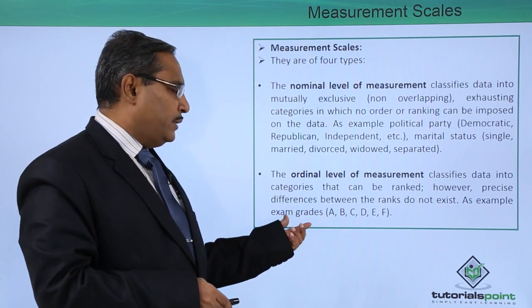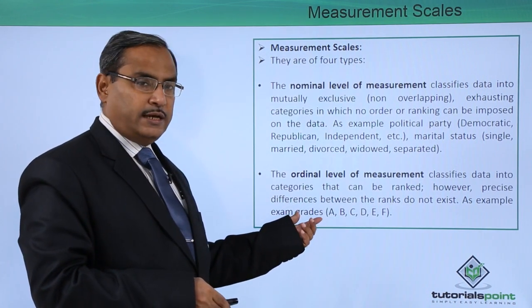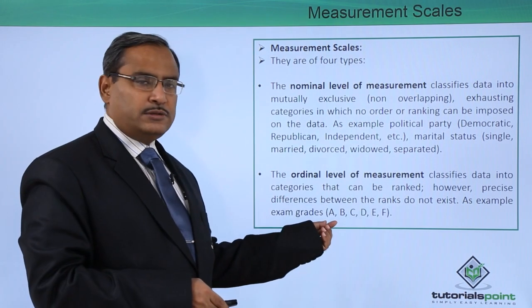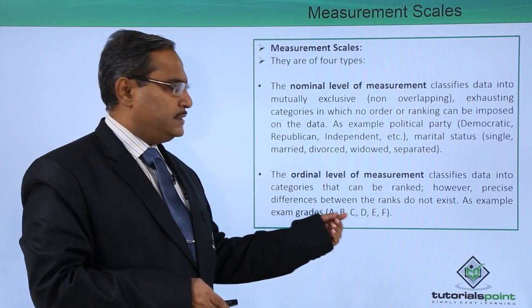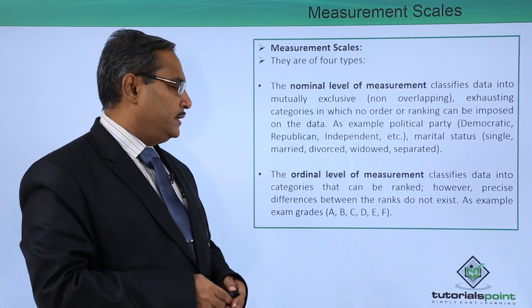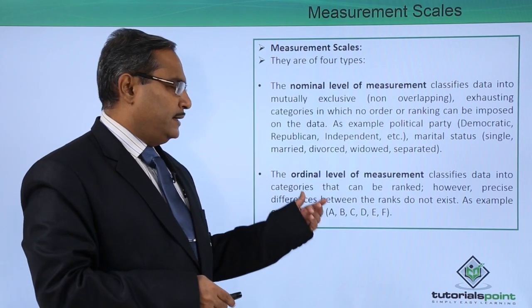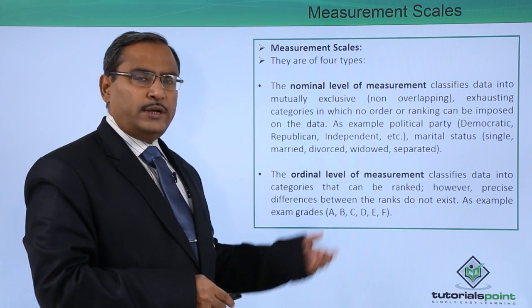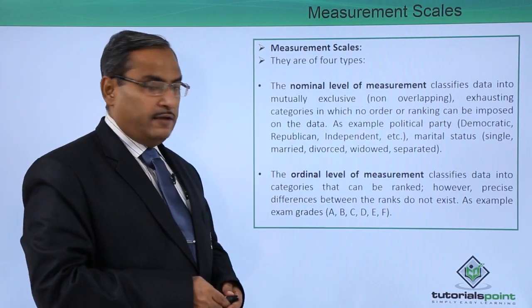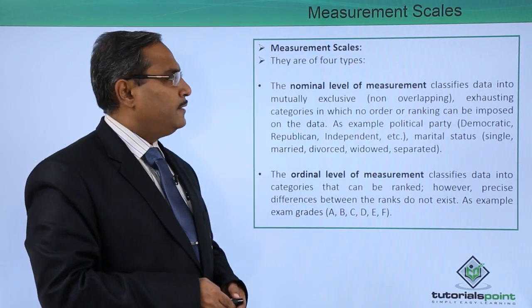As an example, we can consider grades. The values can be A, B, C, D, E, F — so there are 6 different grades. This is a good example of the ordinal level of measurement.